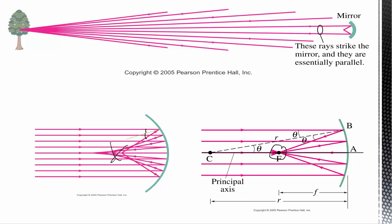If you are an engineer and you wanted a really perfect mirror, rather than a spherical mirror you can have a parabolic mirror. Inexpensive telescopes use mirrors to focus light; the high-quality ones will have parabolic mirrors, but they are a lot more difficult to manufacture and so a lot more expensive. A lot of optics just use spherical mirrors because they are good enough.